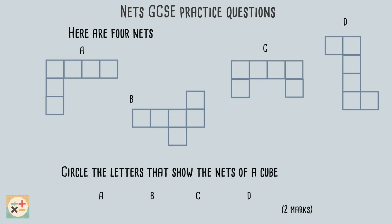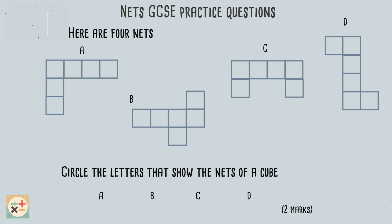Let's have a look at a typical GCSE style question about nets. This question provides four nets and asks you to identify the ones which show the nets of a cube. For this question, we can visualize how the net would fold up into a 3D shape.